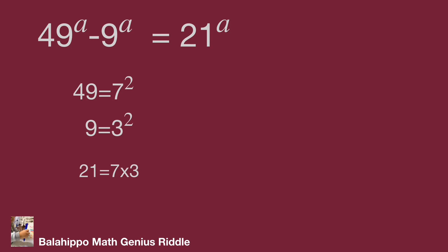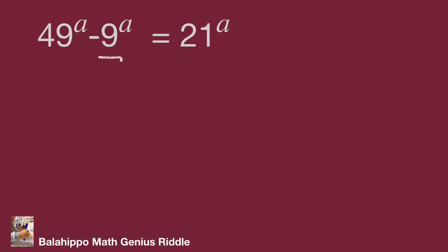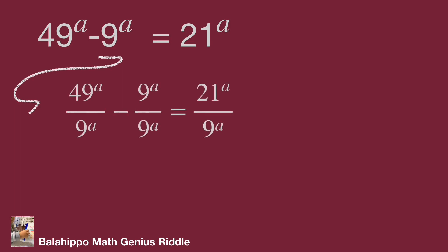To make the given equation easier to operate, I am going to divide both sides of the equation by 9 power of a. This generates the number 1 on the left side, giving us: 49 power of a over 9 power of a minus 1 equals 21 power of a over 9 power of a.